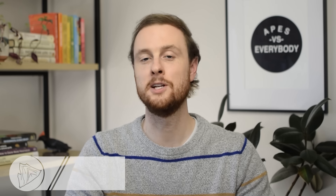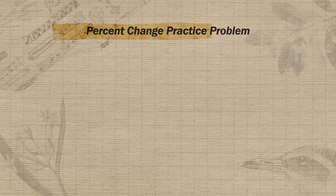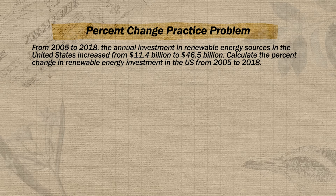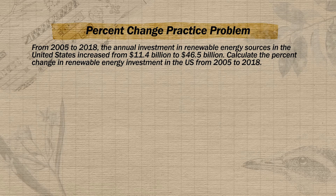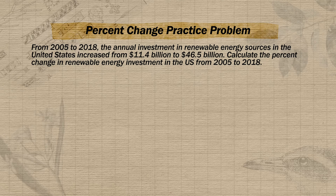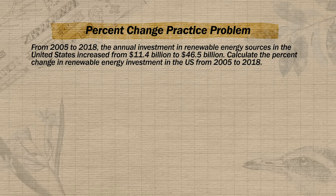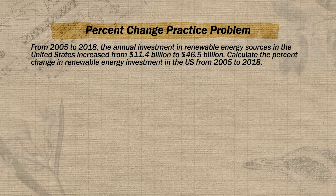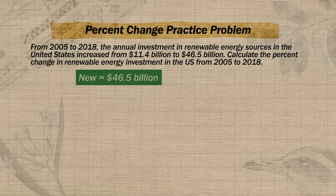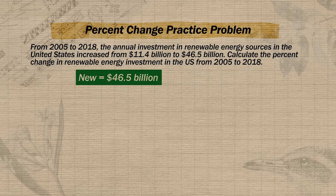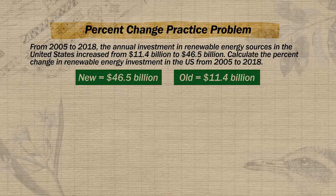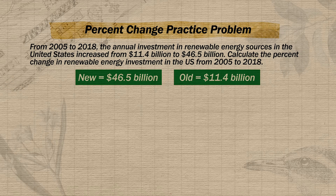Let's take a look at an example using renewable energy. This practice problem states that from 2005 to 2018, the annual investment in renewable energy in the United States increased from $11.4 billion to $46.5 billion, and we need to calculate the percent change. Step one is to identify our new value and our old value. Our new value is $46.5 billion since it's from 2018, and our old value is $11.4 billion since it was our starting value.